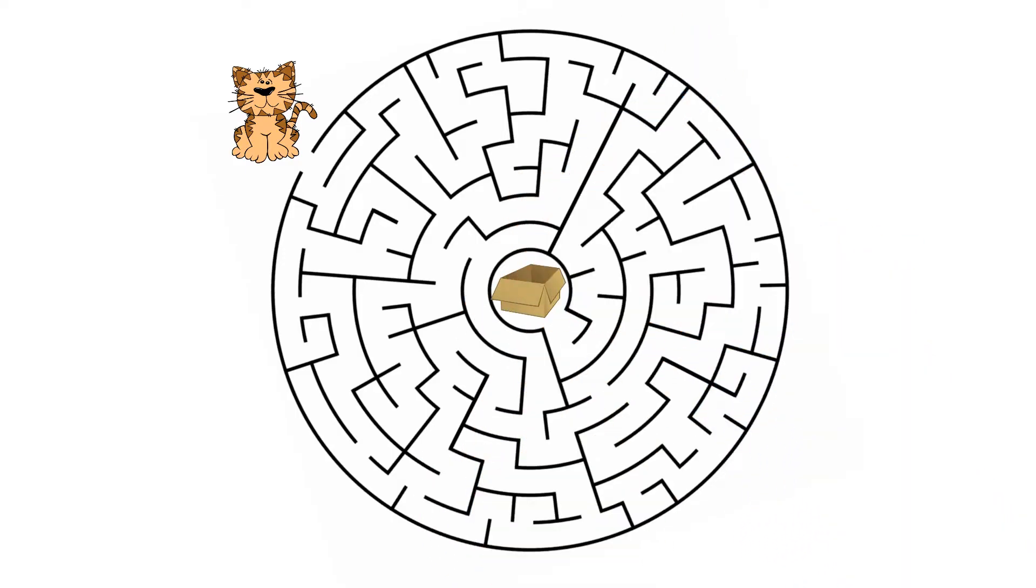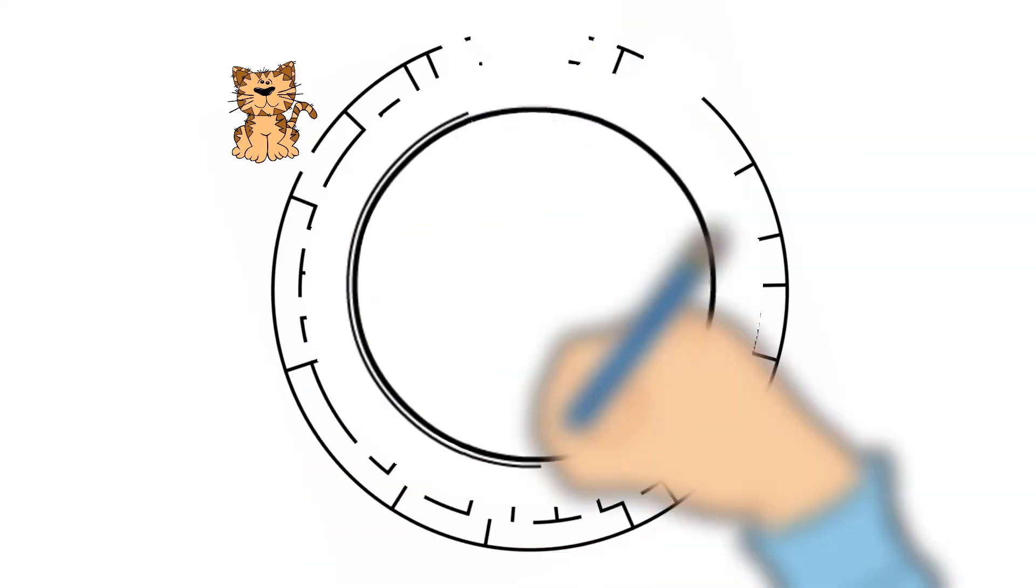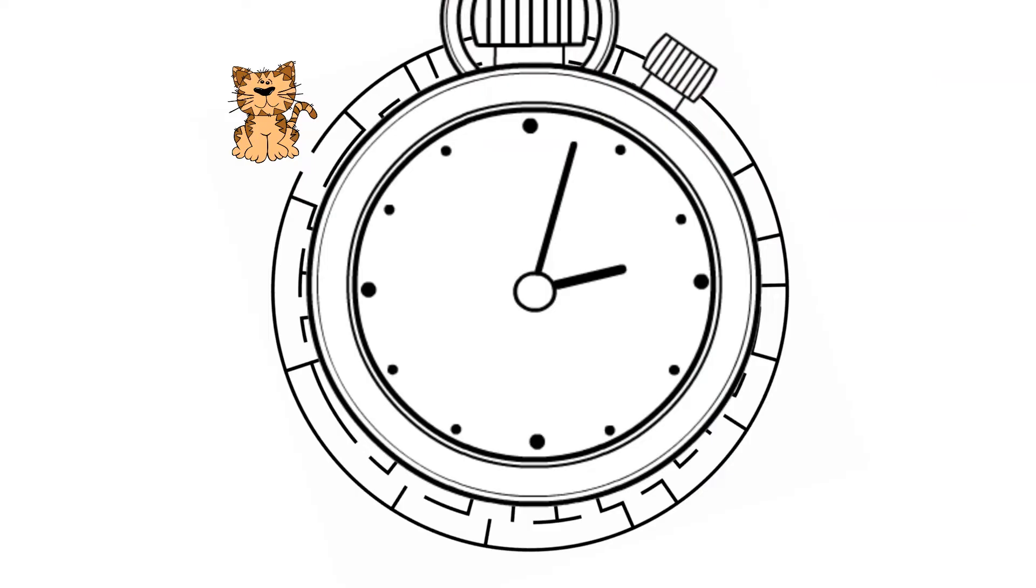If the cat guessed completely random routes for all of eternity, or maybe just a few hours, it would eventually stumble across a correct solution that gets it from the beginning of the maze to the box, but this would take a whole lot of time.